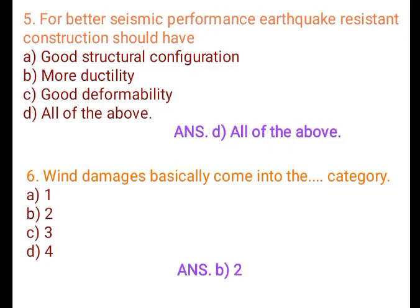Question 5: For better seismic performance, earthquake resistance construction should have: A. Good structure configuration, B. More ductility, C. Good deformability, D. All of the above. Answer: D. All of the above.